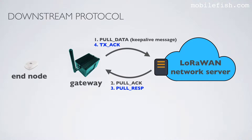Now let's look at the downstream communication. At regular time intervals the gateway sends a pull data packet, also known as a keep-alive message, to the network server. If the gateway is behind a firewall, it is impossible for the network server to send packets to the gateway. The pull data packet keeps any intervening firewall open by informing the server of the gateway UDP port number it can use. The time interval is set by the keep-alive interval key in the global or local configuration JSON file.